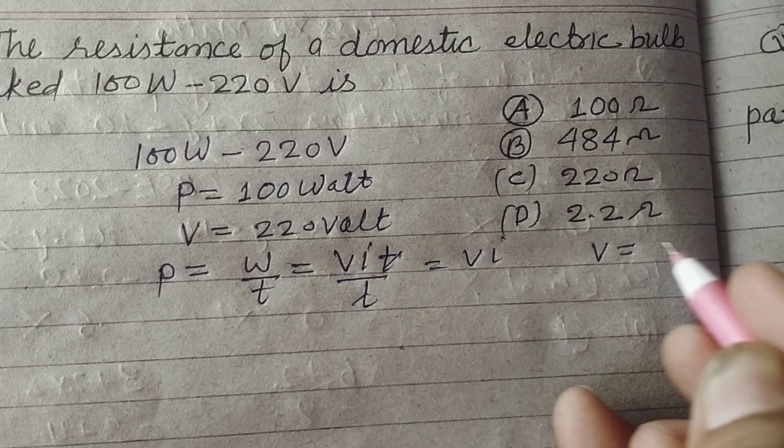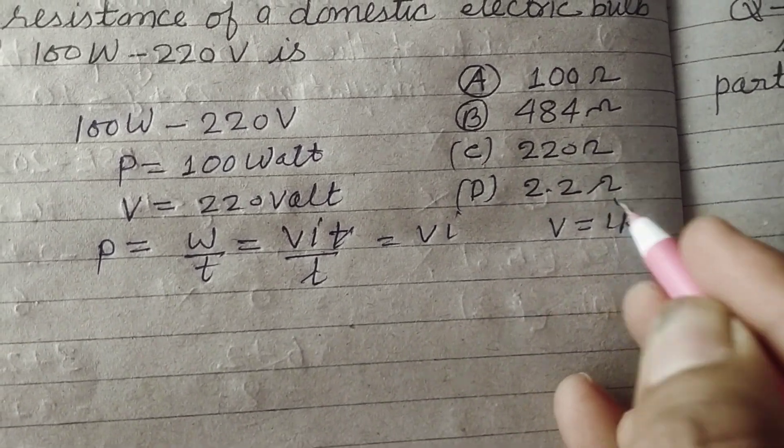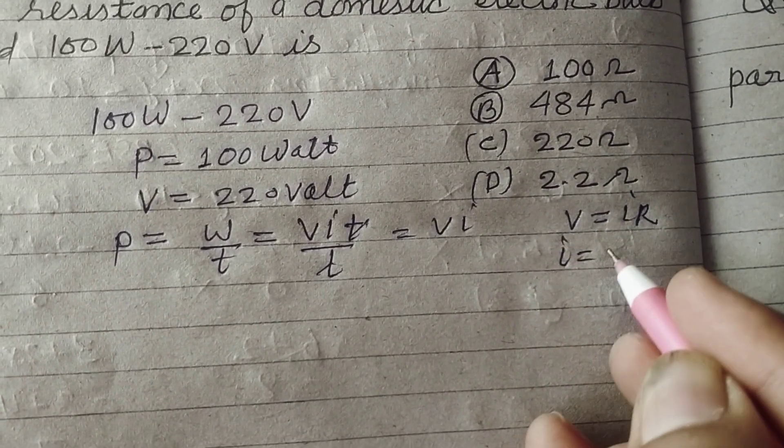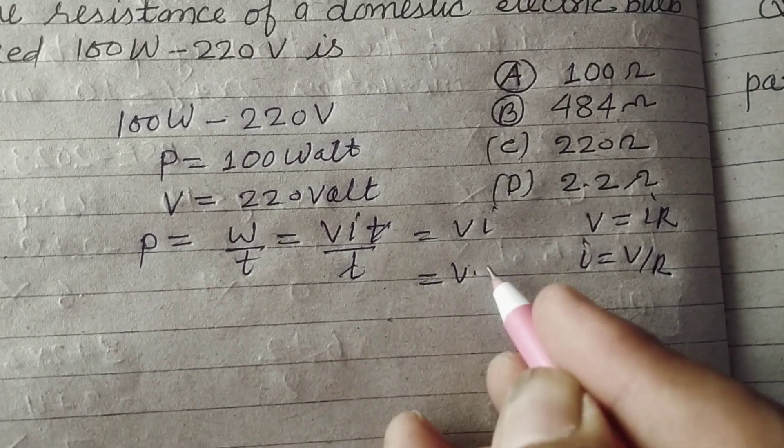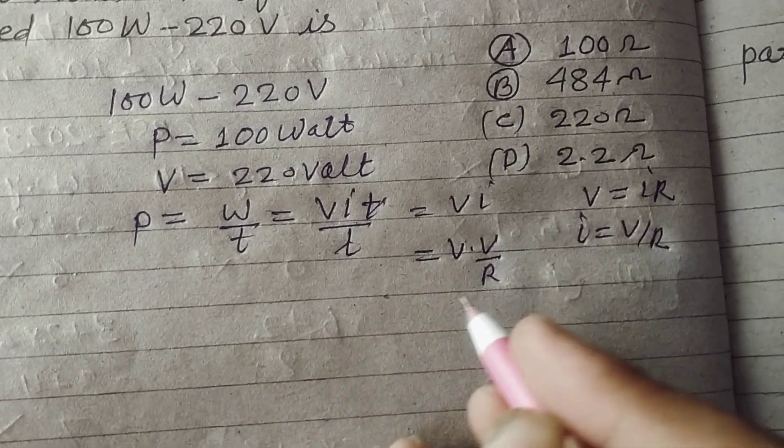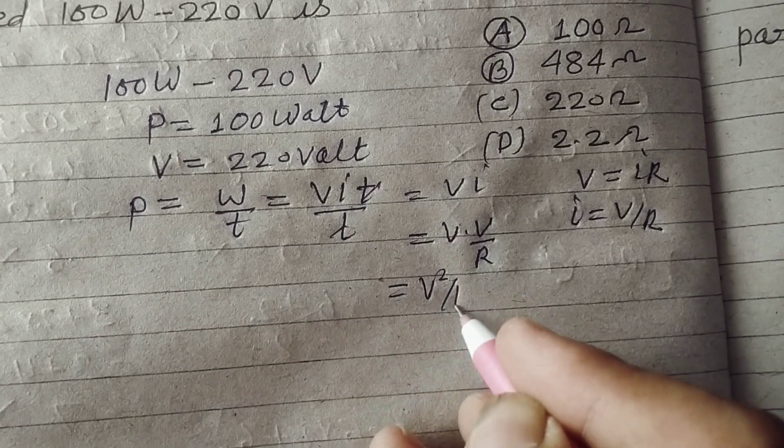And according to Ohm's law, V equal to I R. Therefore I equal to V upon R. So we put here V upon R in place of I. So this is V square upon R.